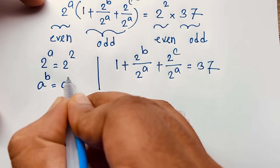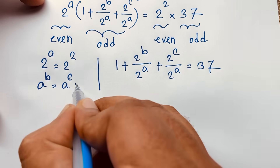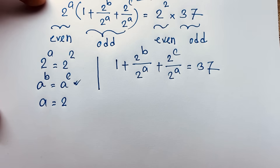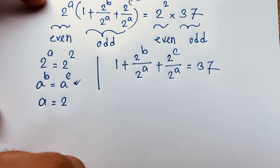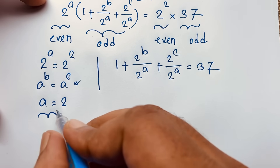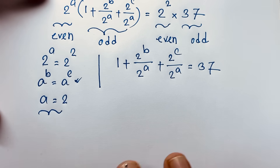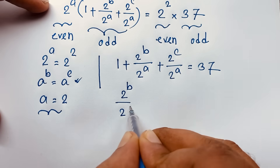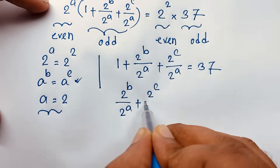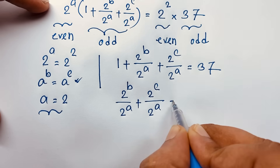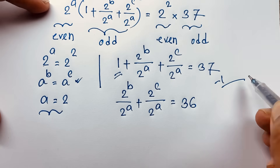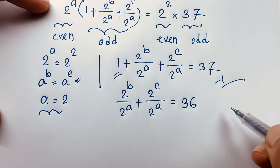Since the bases are the same, by the exponential rule, a = 2. That's our first result. Now we need: 1 + 2^b/2^a + 2^c/2^a = 37, which means 2^b/2^a + 2^c/2^a = 36 (that is, 37 minus 1 = 36).